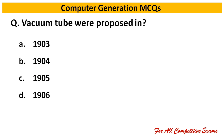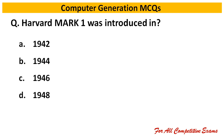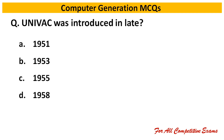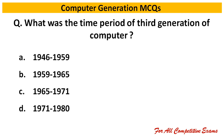Next question: Vacuum tubes were proposed in — Right answer is 1934. Next question: Harvard Mark 1 was introduced in — Right answer is 1944. Next question: UNIVAC was introduced in late — Right answer is 1951.